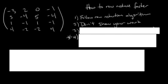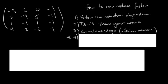The next tip is to combine steps. Don't combine too many steps because you'll just confuse yourself, but within reason, combine them. For example, if you can swap two rows and then scale one of them, you can do both of those at once so you only have to rewrite the whole matrix once.